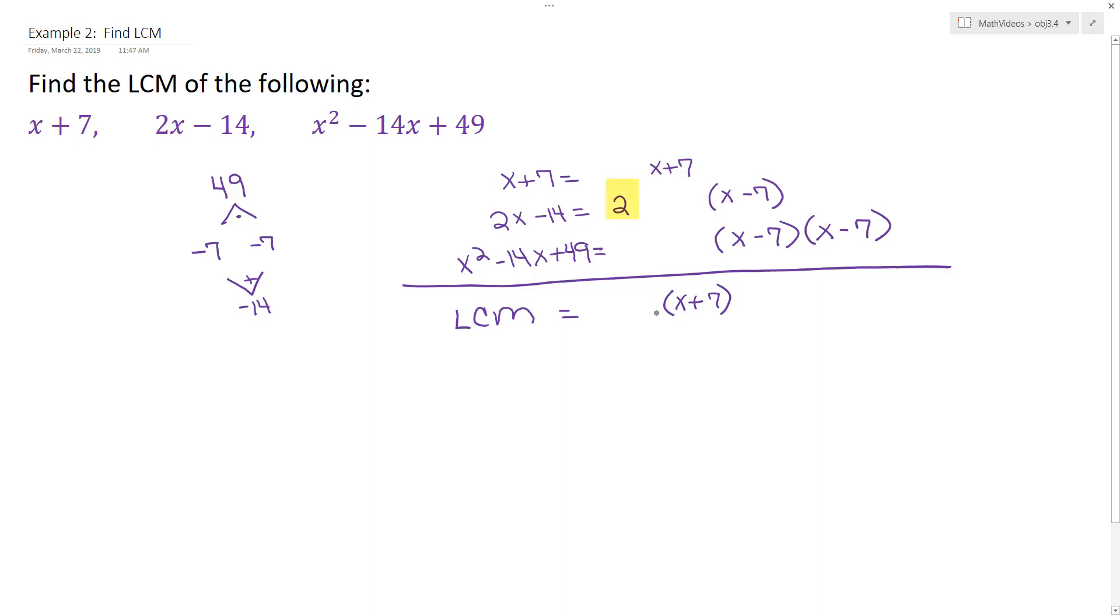And so for our second expression, it says we need a factor of 2. At the moment, we don't have a factor of 2, so we need to multiply that factor in. And then it also says we need a factor of x minus 7. We do not have that, so we need to multiply it in.